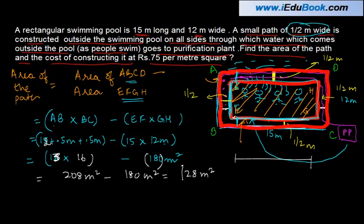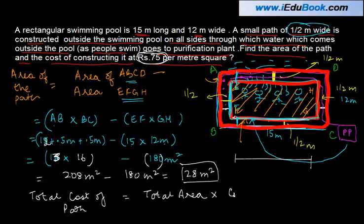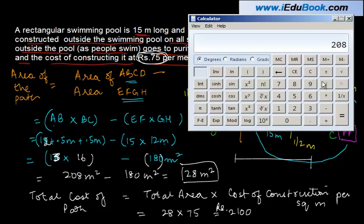So the area of the boundary is actually 28 meter square. One meter construction takes rupees 75, so what is the total cost of path? It's equal to total area into cost of construction per square meter. 28 into 75, this will give you 2100 rupees. You want to see it on the calculator? Let's do it: 28 times 75 is equal to 2100.